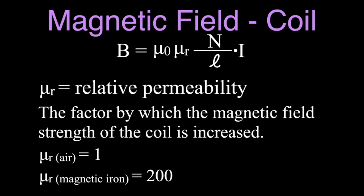If we have something like iron or nickel, they have relative permeabilities greater than 1. For iron, it's around 200, depending on the type of iron. For nickel, it's around 600, depending on the composition. If you stick a piece of iron inside the coil, you increase the magnetic field strength by a factor of 200 — that's what the equation shows when we add μᵣ.